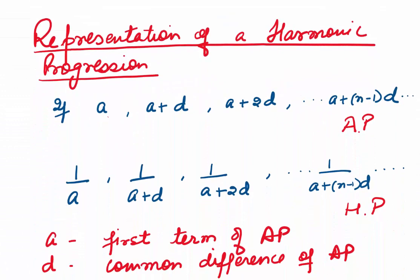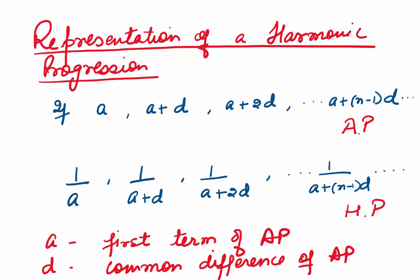Now how do we represent the harmonic progression? Let us say we are given an arithmetic progression where the first term is a and d is the common difference. The terms of the AP will be a, a+d, a+2d, ..., a+(n-1)d. Now take the reciprocal of all these terms: 1/a, 1/(a+d), and the nth term is 1/(a+(n-1)d). This progression obtained by taking reciprocals of the AP is called the harmonic progression.